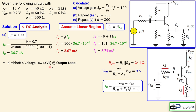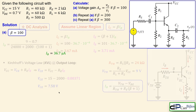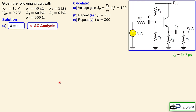Applying KVL at the output loop to verify the linear region of operation: VCC equals VCE plus the voltage across RE. Substituting the values — 2000 ohms for RE and the calculated emitter current — we get VCE of 7.58 volts. This is definitely larger than VCE_sat of 0.2 V, confirming the linear region assumption is valid.